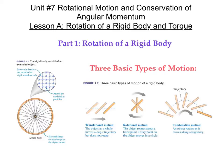A rigid body is an extended object whose size and shape does not change as it moves. For example, this bicycle tire is a rigid body — its shape and size does not change as it rotates. There are three basic types of motion. First, translational motion, which is the sliding type of motion we've been studying, where the object as a whole moves along a trajectory but does not rotate. Then there's rotational motion.